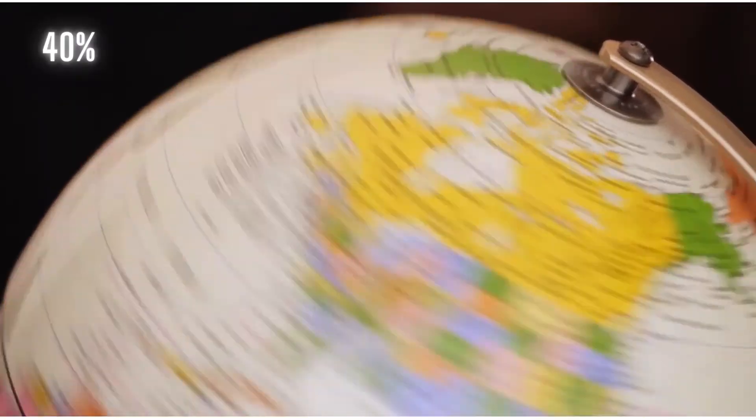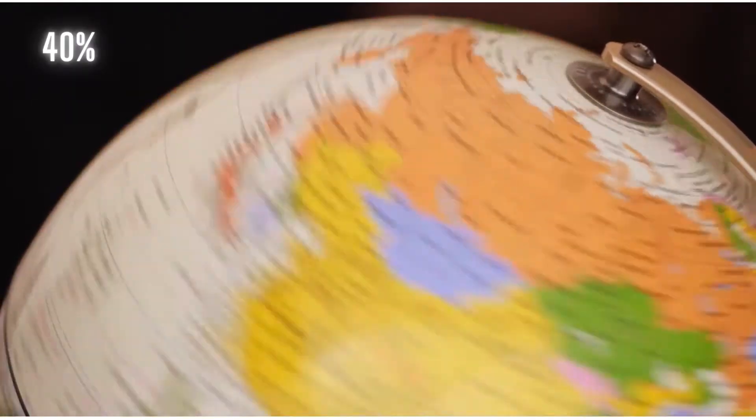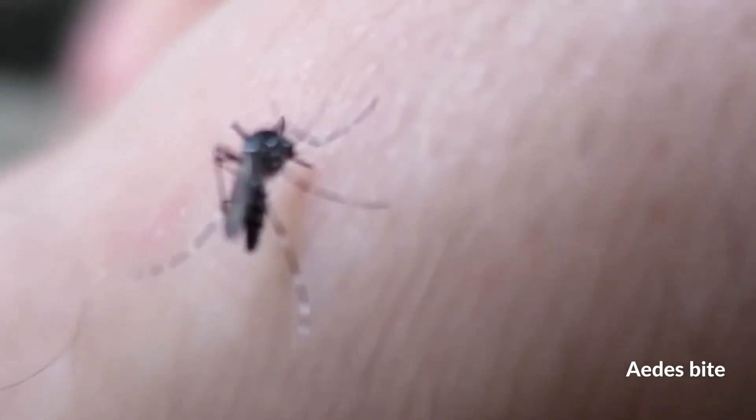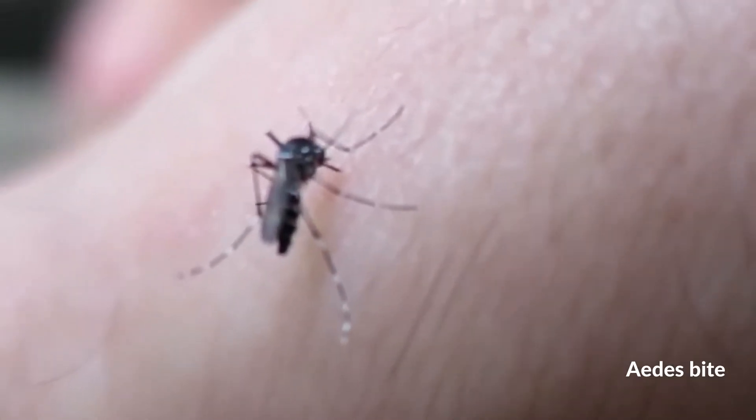40% of the world's population live in areas with a risk of dengue. Females are the ones that bite and transmit disease.